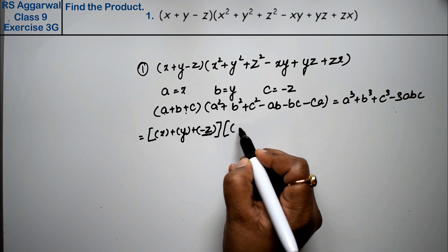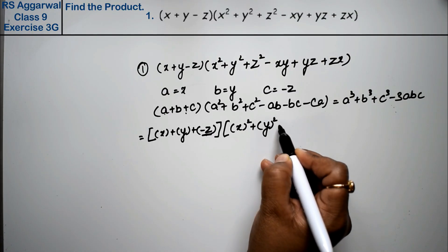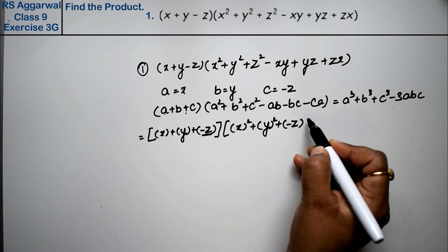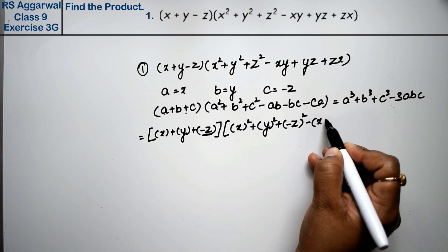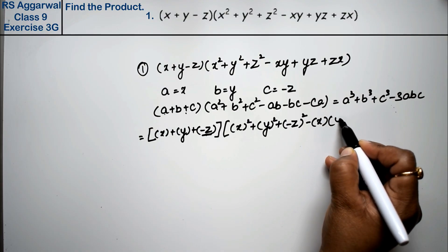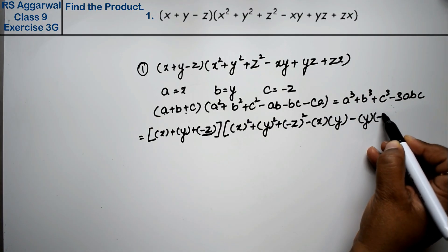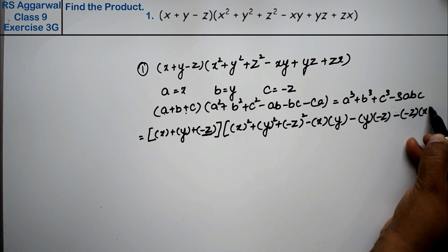Now a², that means x whole square plus y whole square plus minus z which we took as c whole square minus ab, a is x and b is y, minus bc minus ca, minus z into x, right friends?